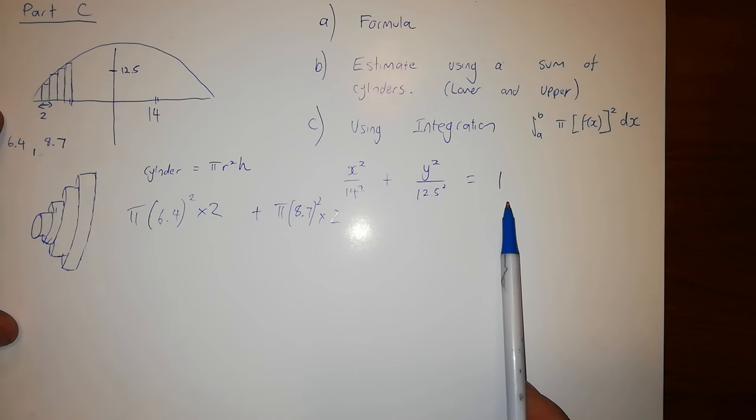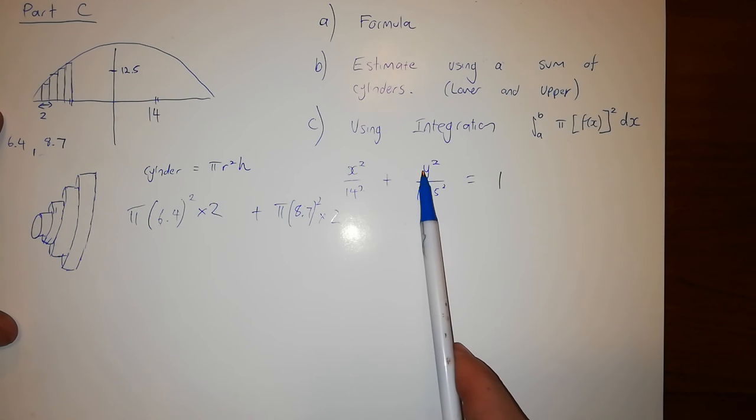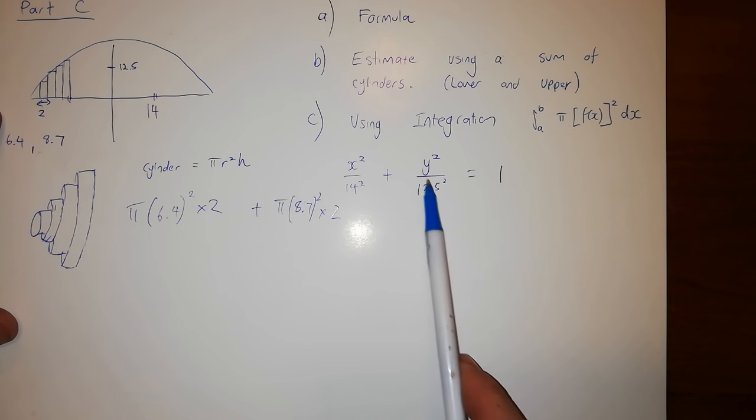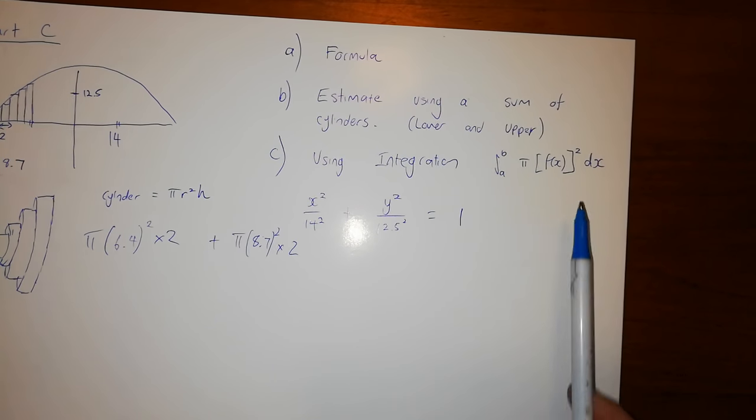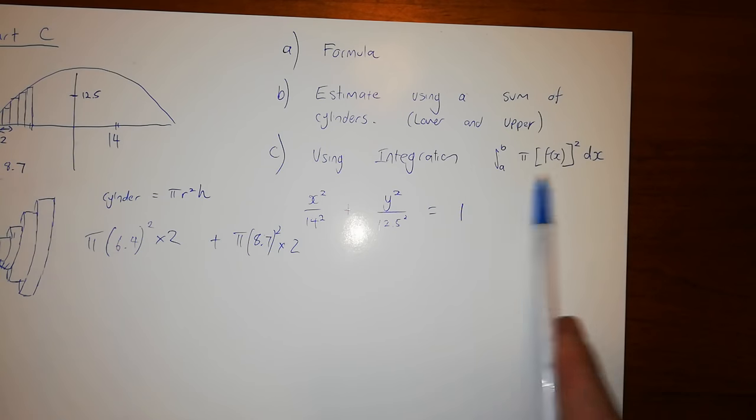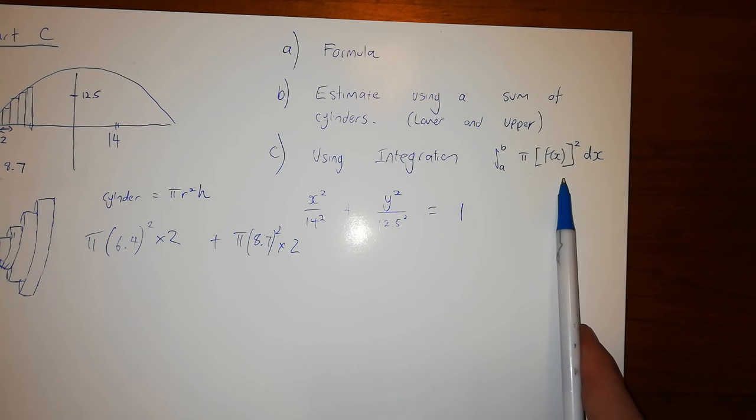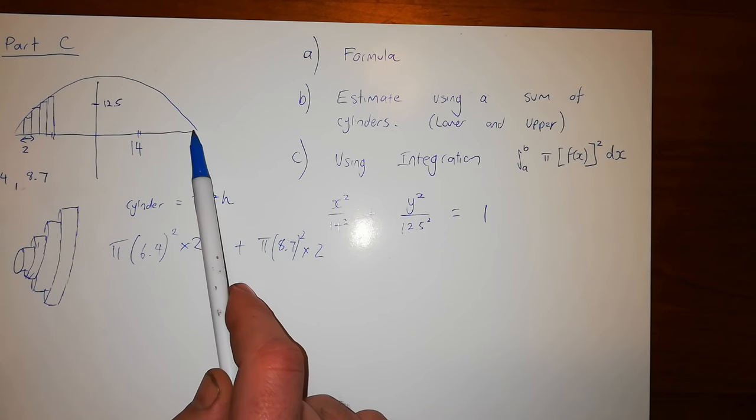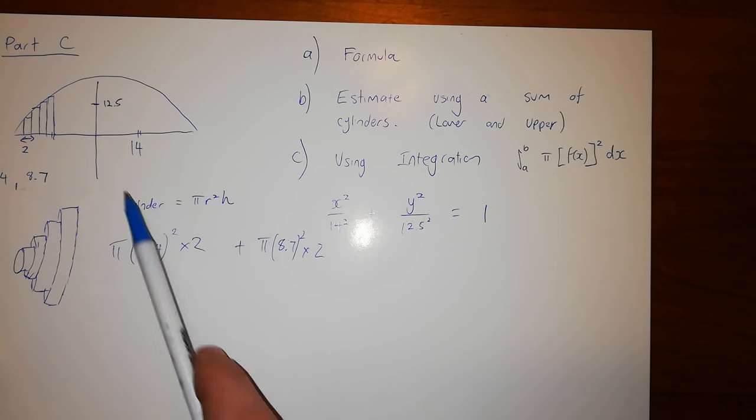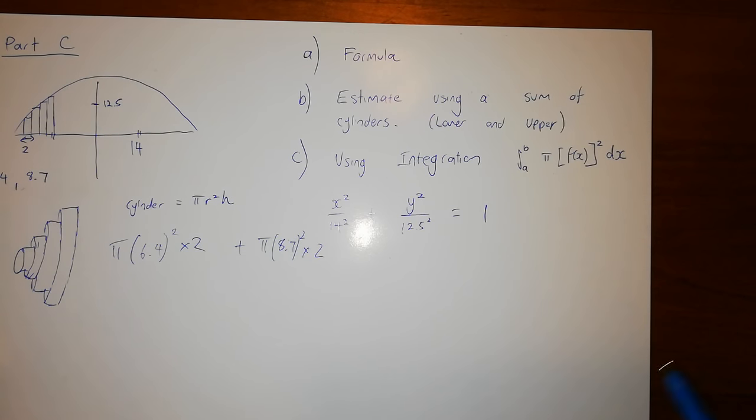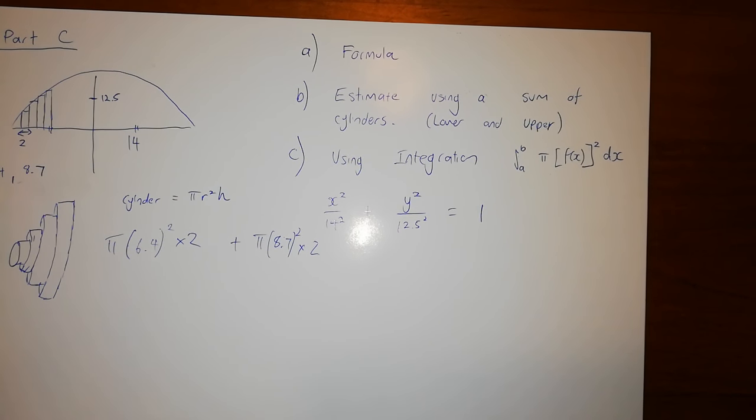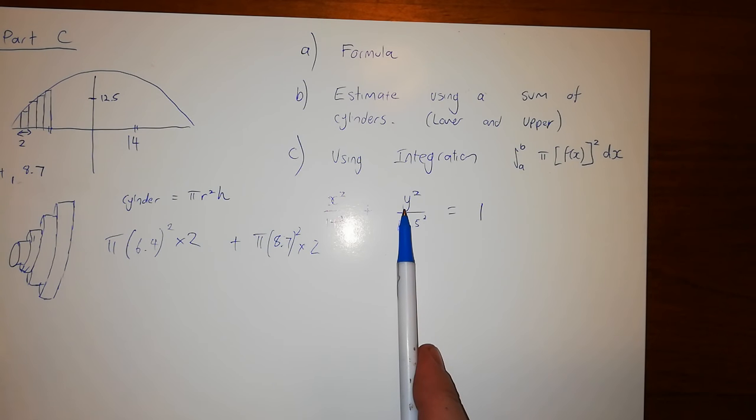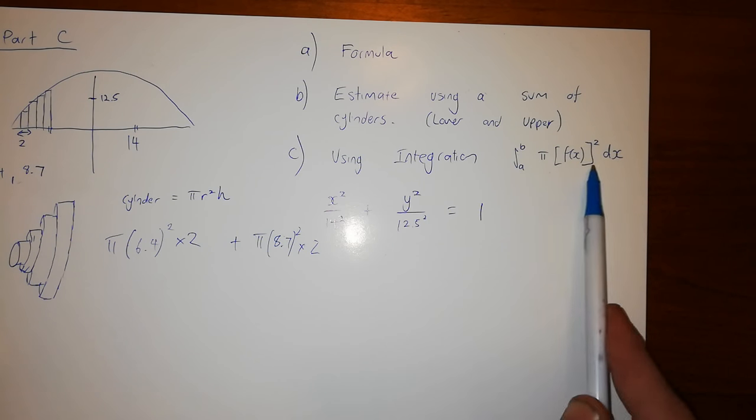So you're given this formula here. So you need to rearrange that to get y by itself. I'm not going to show you how to do that. You should be pretty good at algebra. You need to rearrange that to get y by itself, and then you're just putting it into this formula here over the appropriate intervals. From minus 14 to positive 14 or whatever it might be. You might go from 0 to 14 and multiply it by 2 as it is symmetric about the y-axis. But we're rearranging that to get y by itself. We're putting it into this formula.